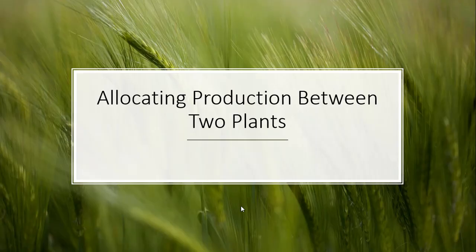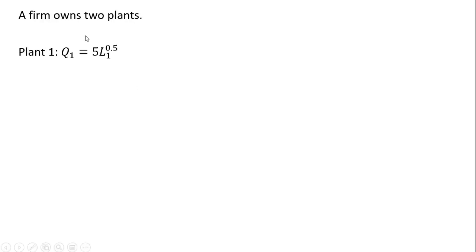In this video, we're going to look at allocating production between two plants. So we have a firm that owns two plants. In plant one, the production function is given as follows. And in plant two, we have a slightly different production function.